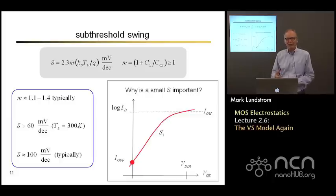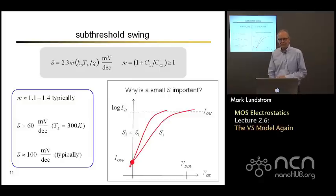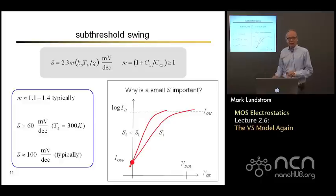There is some maximum leakage current that we can tolerate, and a designer will specify that to you. It might be 1 microamp per micrometer of off-current. So let's say that we had a sub-threshold swing that was even smaller. We could design the device to have the same acceptable off-current, but now we could reach the required on-current at a significantly lower voltage.